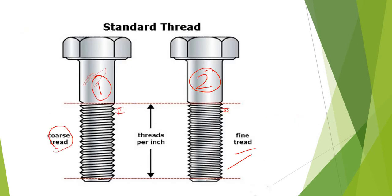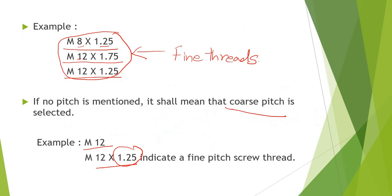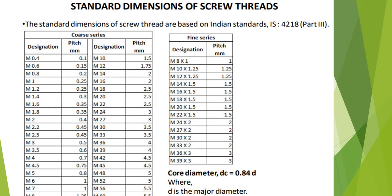Fine pitch means there will be more threads per unit length — that is, the pitch is small and the number of threads per length is greater than in coarse threads. This table gives some standard dimensions of screw threads as per Indian Standard IS 4218. These are the commonly used dimensions.